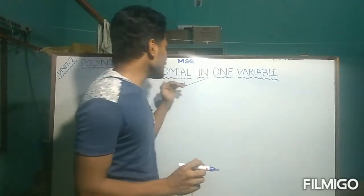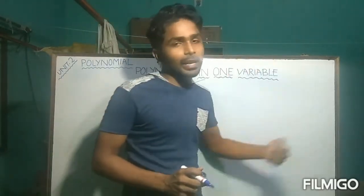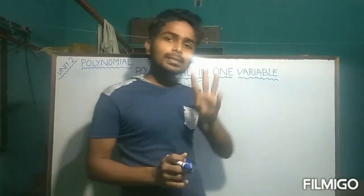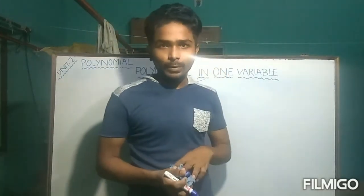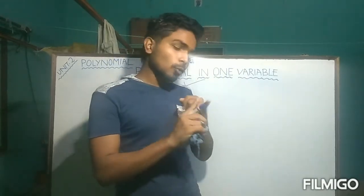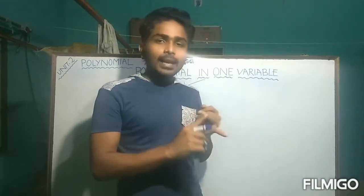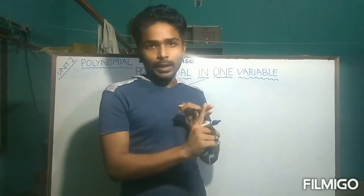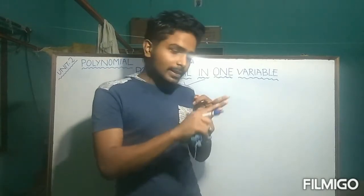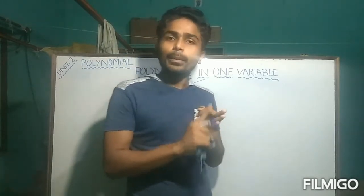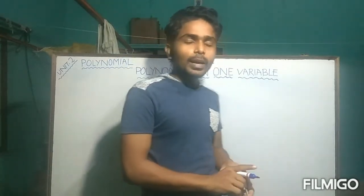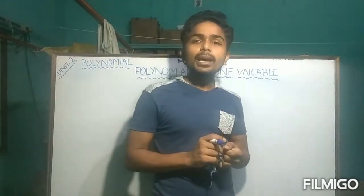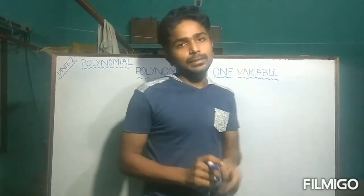First, we have to know what is a polynomial in one variable. As we know, a polynomial has three parts: coefficients, variables, and exponents. These three parts combine together to form a polynomial, and the condition is that the exponent must be a non-negative integer.